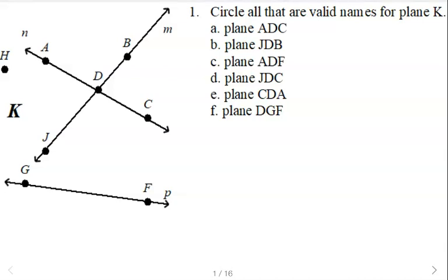As we go over these, make corrections on your page and use this to study with along with the review that we did yesterday. We're going to choose all of these names that are valid names for plane K. In order to name a plane, you can either use one capital letter not representing a point — so plane K is one way to name that plane — or another way is to use three non-collinear points.